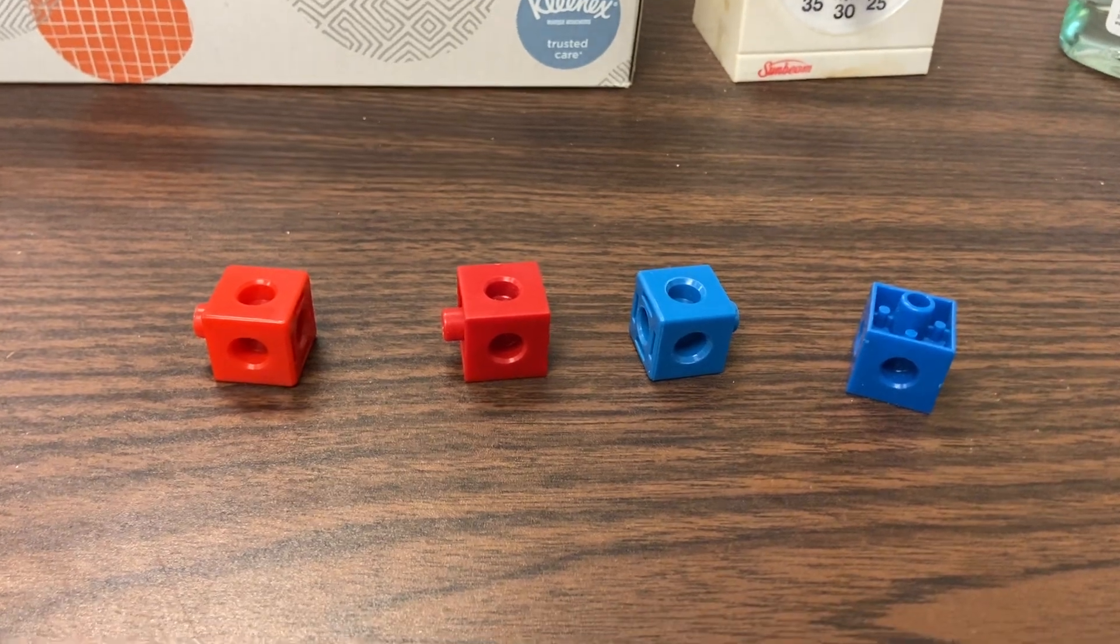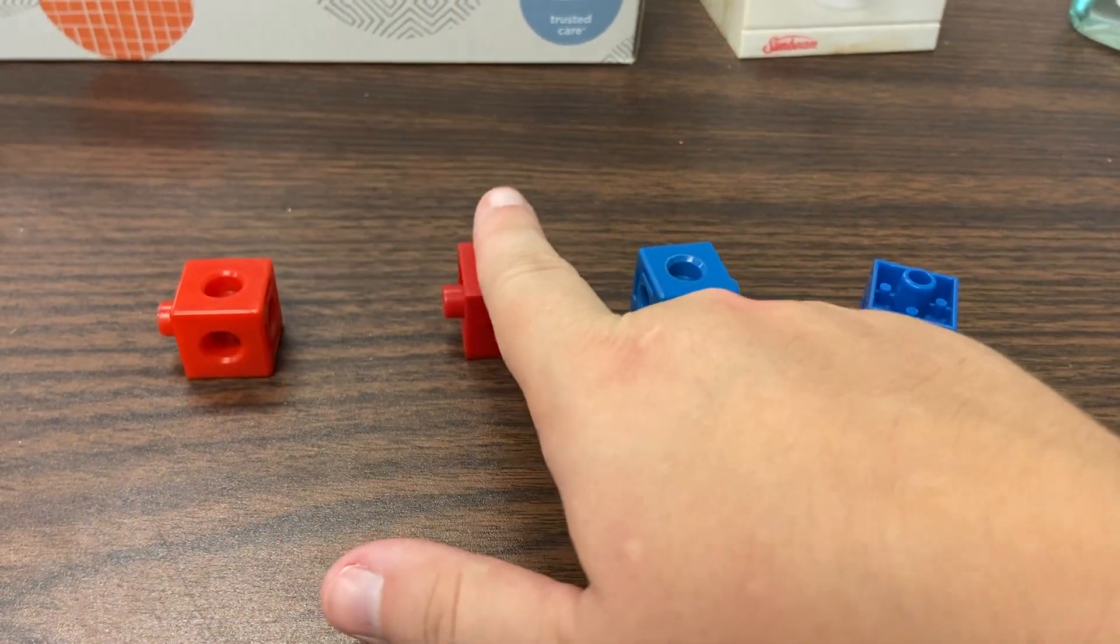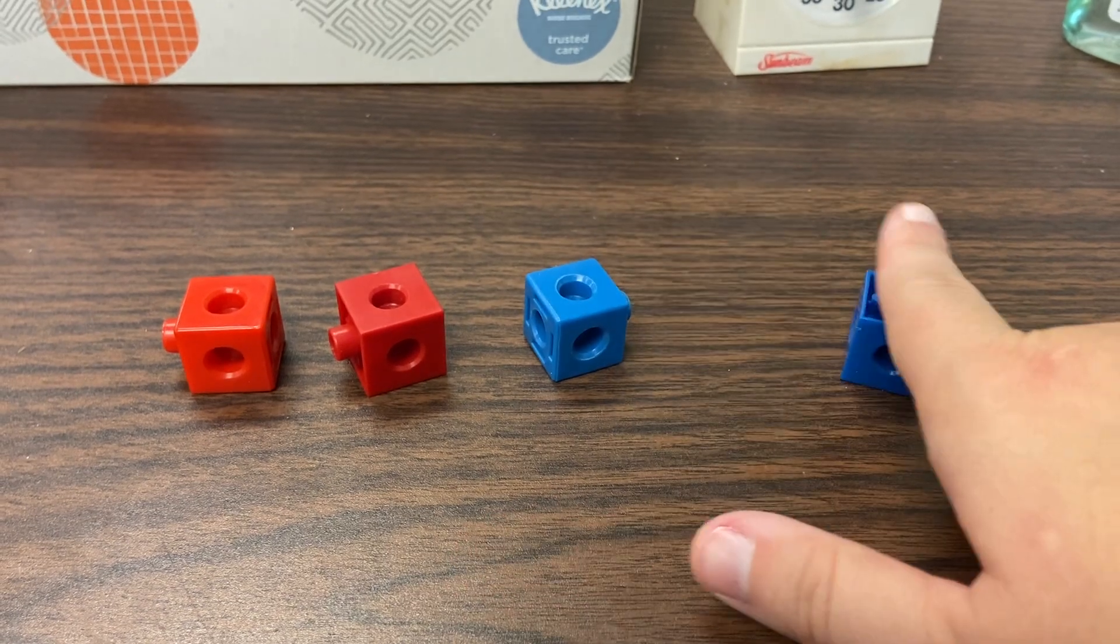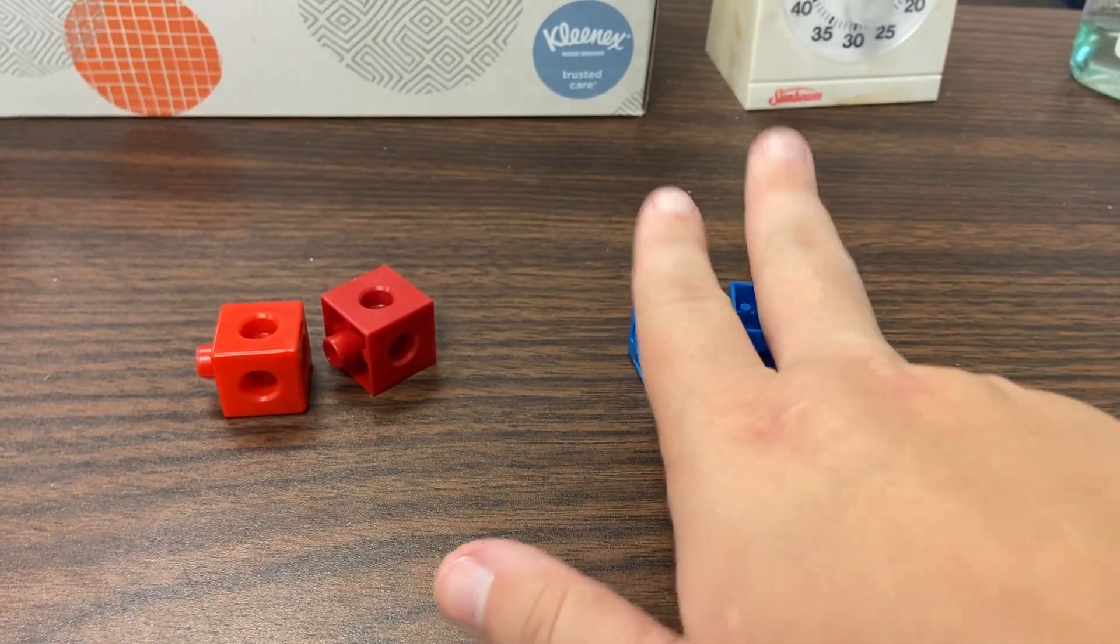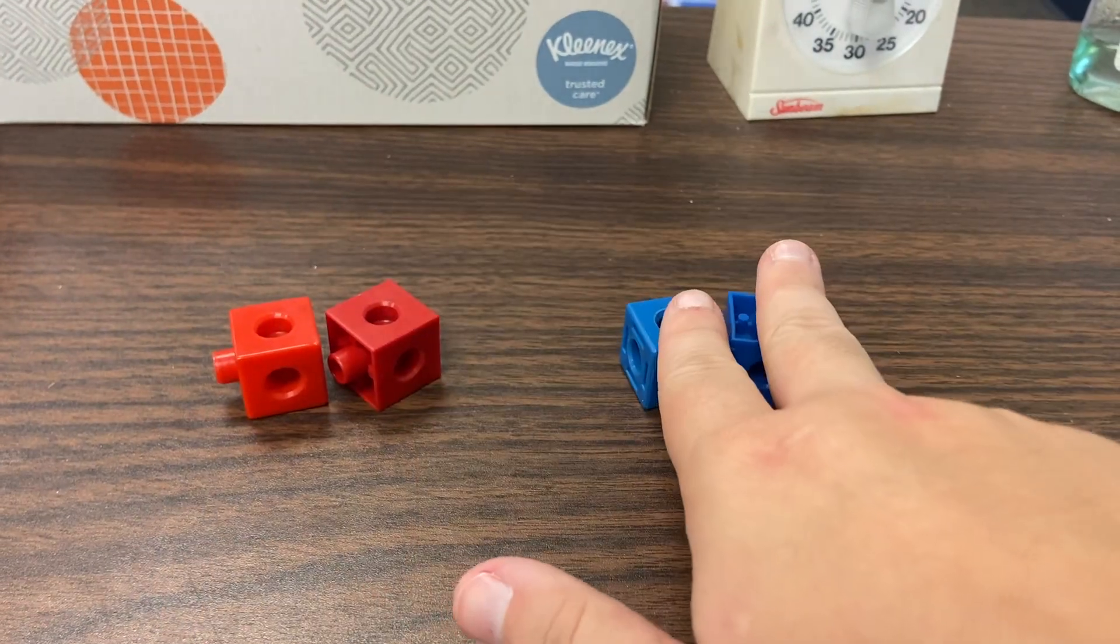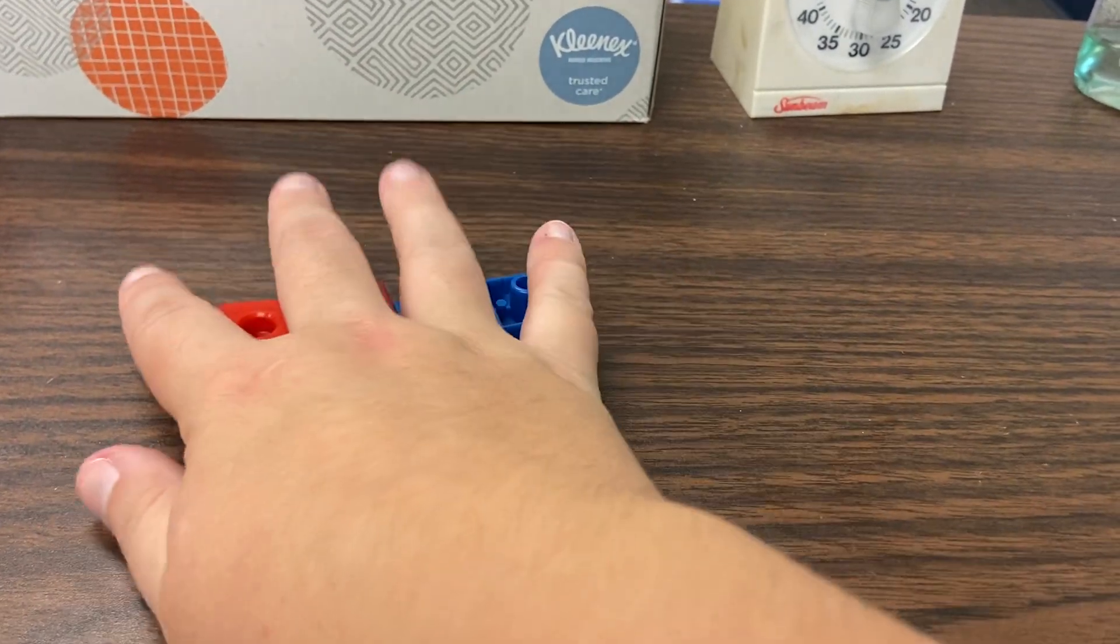How many do you have all together? You have one, two, three, four. Two red and two blue. So two and two is four.